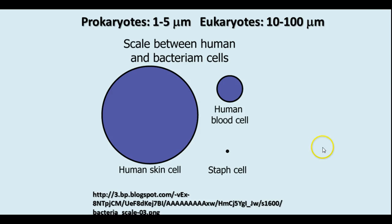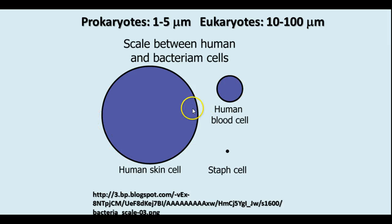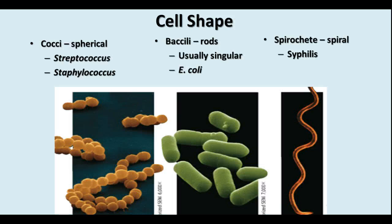Bacteria are usually about one to five microns or micrometers in diameter, while eukaryote cells are about ten to a hundred micrometers in diameter, so they're a lot smaller. This scale shows the difference between human skin cells, a blood cell, and a staph cell — there's a big difference in size compared to eukaryotic cells in general.